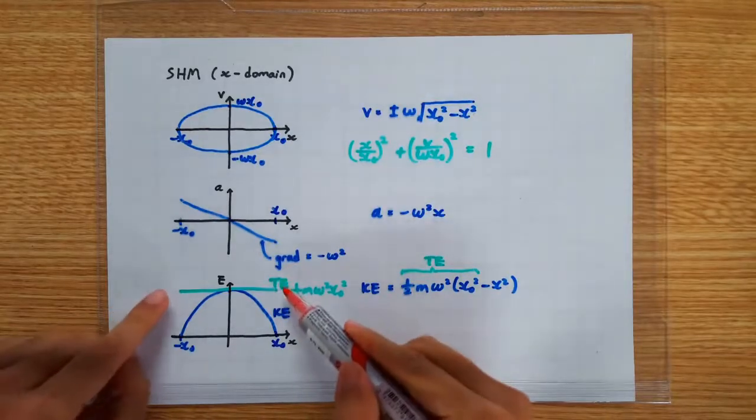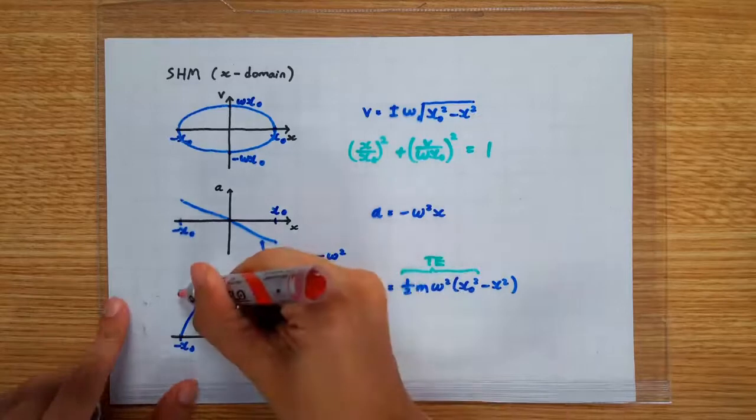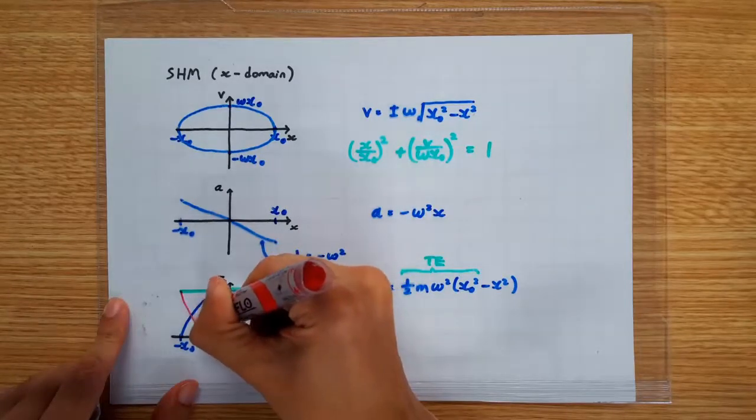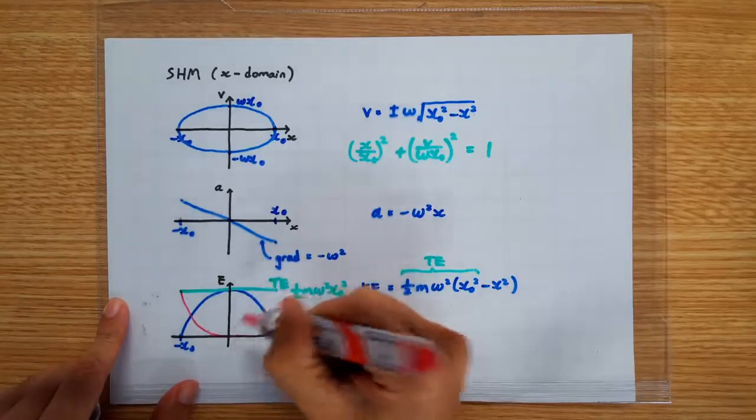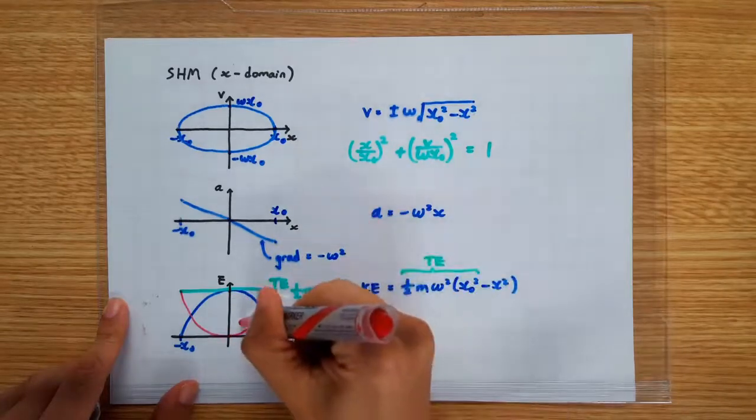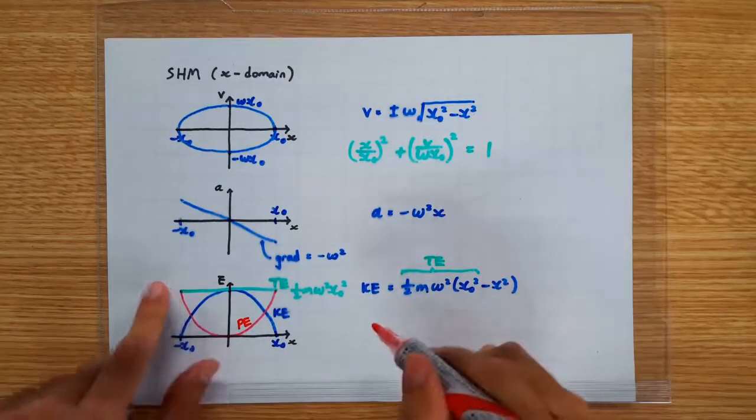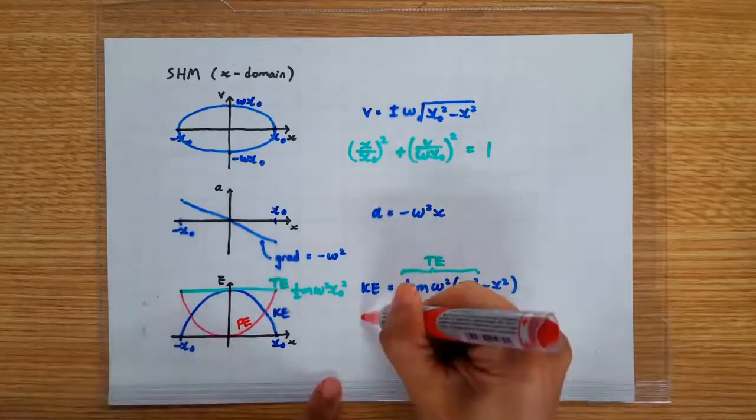If we take the total energy minus away the KE, what we get is, of course, the potential energy. So the potential energy graph is clearly a quadratic curve.